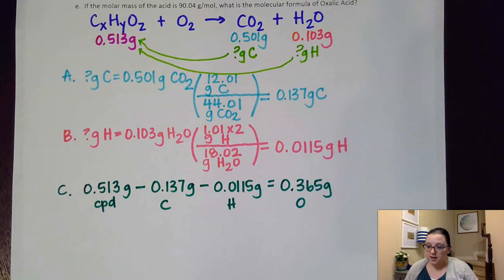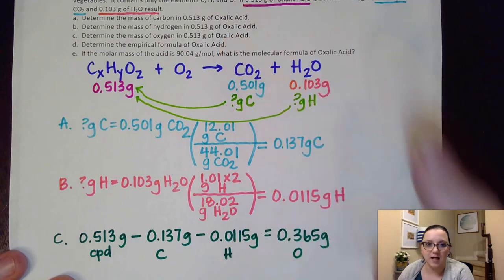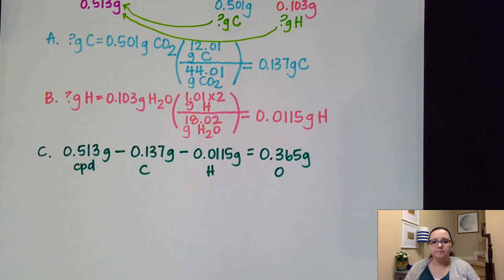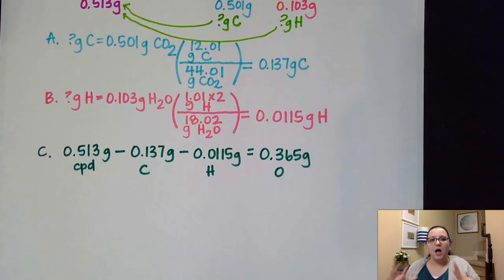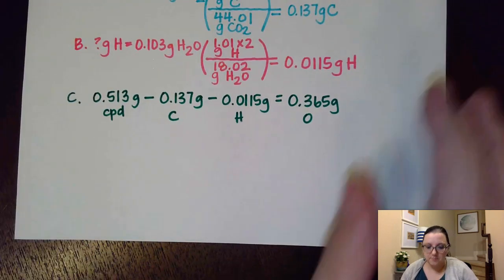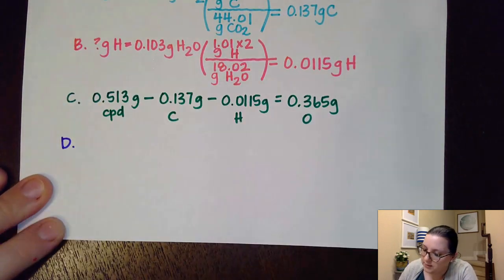All right, so now that I have those, now what they ask us to do is determine the empirical formula of oxalic acid. Now normally if I have percent mass numbers, I would do the percent to mass, mass to mole, divide by smallest, multiply to whole. And I'm still going to do those steps, except that because I have a mass to mass to mass ratio, I don't need to do a percent to mass step. That step is not going to be necessary. So the next step that I would do is the mass to mole step.